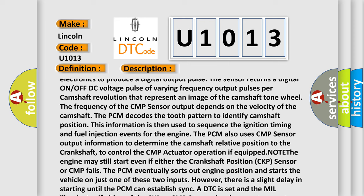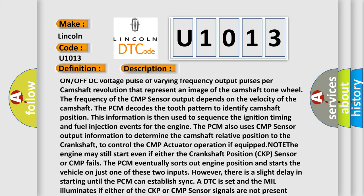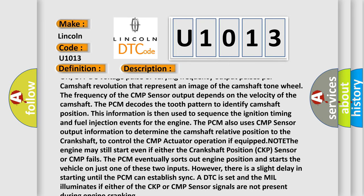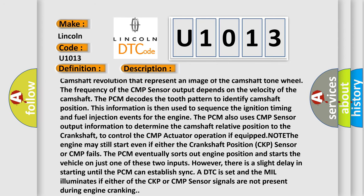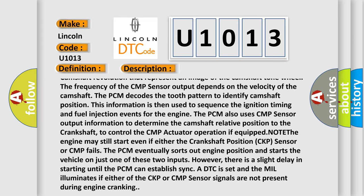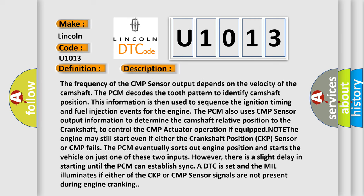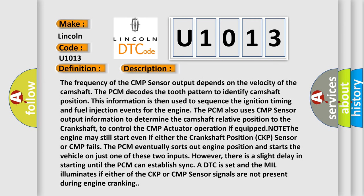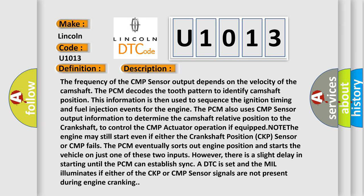The PCM also uses CMP sensor output information to determine the camshaft's relative position to the crankshaft, and to control CMP actuator operation if equipped. Note: the engine may still start even if either the crankshaft position (CKP) sensor or CMP sensor fails. The PCM eventually sorts out engine position and starts the vehicle on just one of these two inputs. However, there is a slight delay in starting until the PCM can establish sync. A DTC is set and the MIL illuminates if either the CKP or CMP sensor signals are not present during engine cranking.